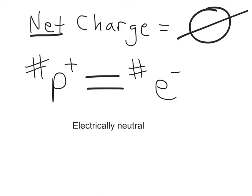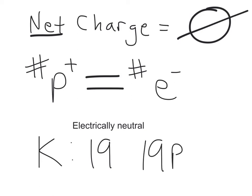Atoms that have a net charge of zero are called electrically neutral. For example, potassium has an atomic number of 19, which means it has 19 protons. Because the net charge of one potassium atom is zero, it must also have 19 electrons.